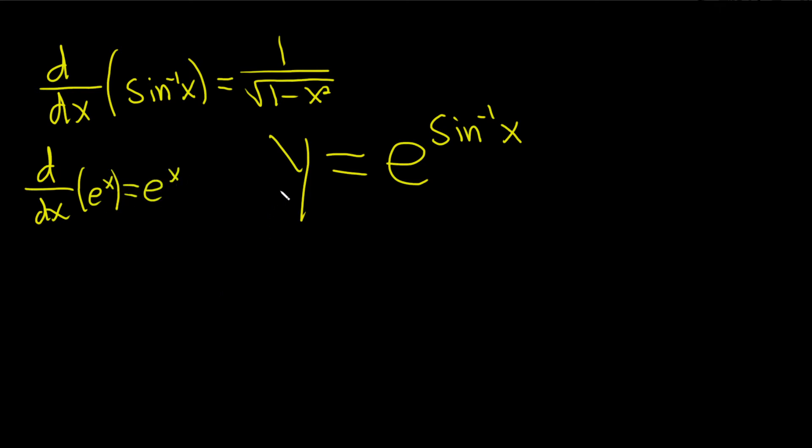Okay, so here when we take the derivative, we have to use the chain rule. So dy dx, the derivative of e to the x is e to the x, so here it's e to the inverse sine of x times the derivative of the inside function.